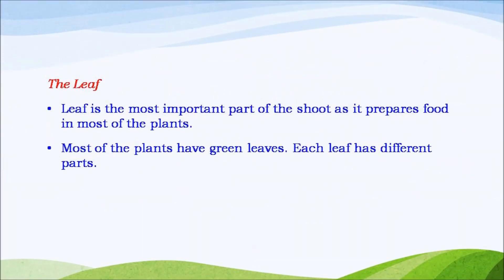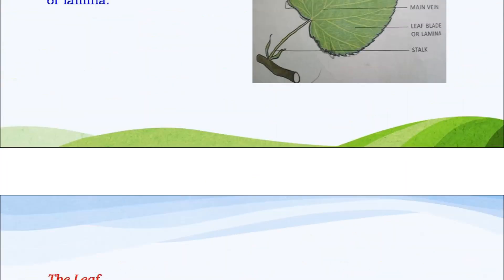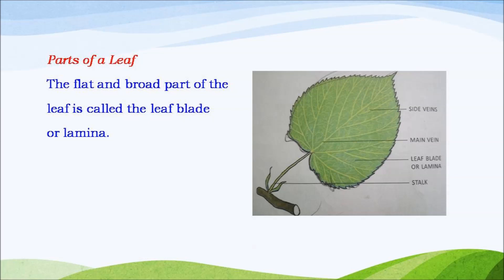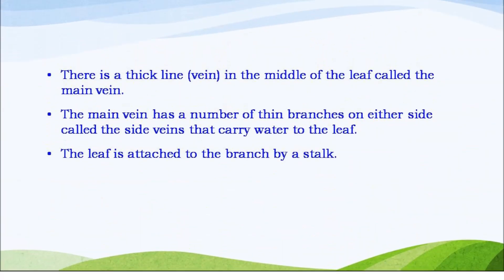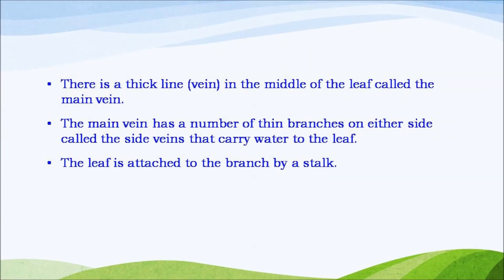The leaf. Leaf is the most important part of the shoot as it prepares food in most of the plants. Most of the plants have green leaves. Each leaf has different parts. The flat and broad part of the leaf is called the leaf blade or lamina. There is a thick line in the middle of the leaf called the main vein. The main vein has a number of thin branches on either side called the side veins that carry water to the leaf. The leaf is attached to the branch by a stalk.